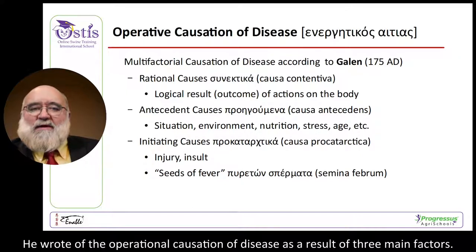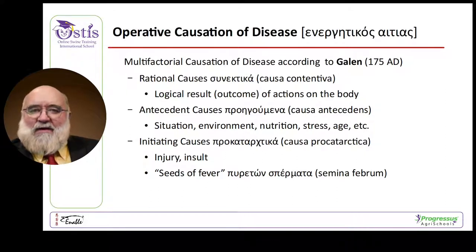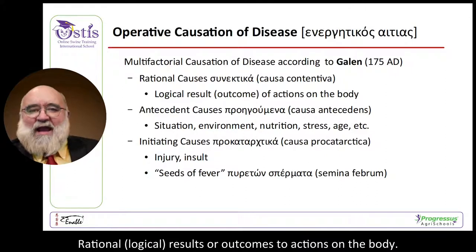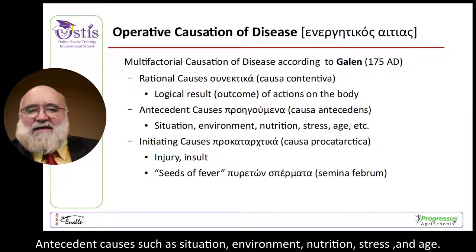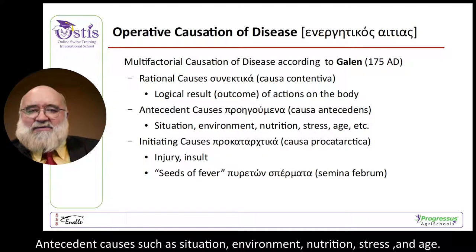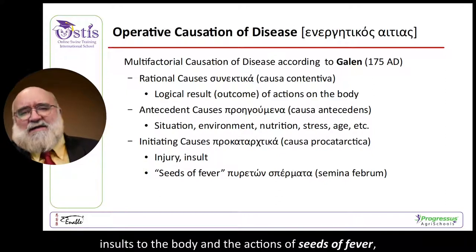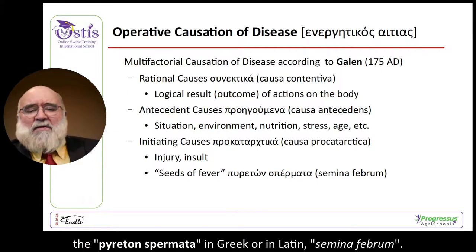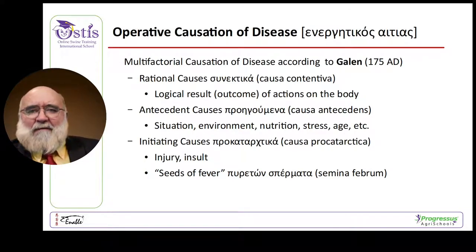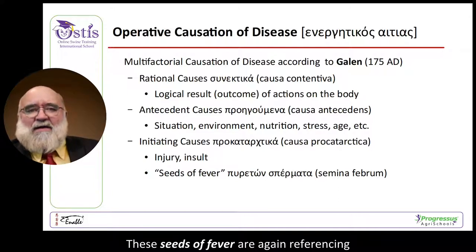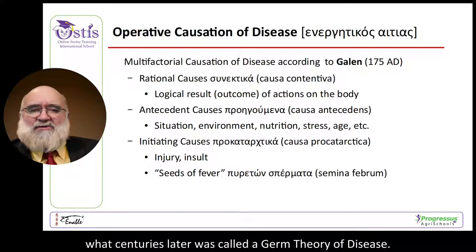Galen wrote of the operational causation of disease as the result of three main factors. First, rational and logical results or outcomes to actions on the body. Second, antecedent causes such as situation, environment, nutrition, stress, and age. Third, antecedent causes such as injuries, insults to the body, and the actions of seeds of fever — the puritan spermata in Greek, or semina februm in Latin. These seeds of fever are again referencing what centuries later was called the germ theory of disease.